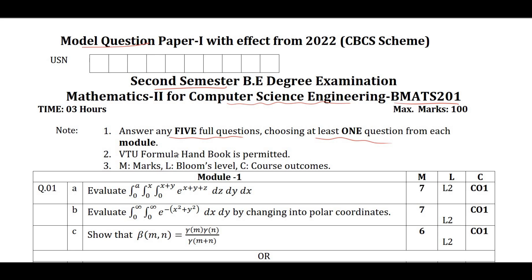They are going to provide a formula handbook for you, so you can make use of it to solve any problems here. Along with this discussion, I am going to tell you how to score easily a minimum of 70 marks. If you just follow whatever I am going to say, definitely you can score this minimum of 70 marks.